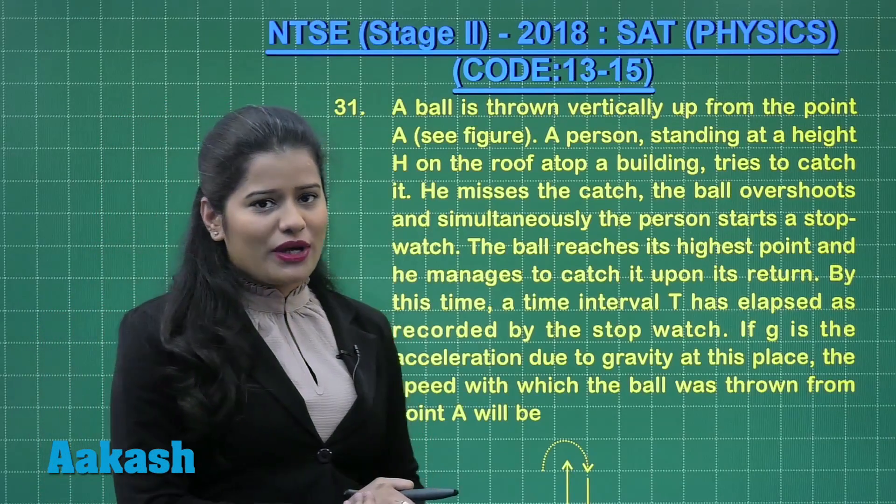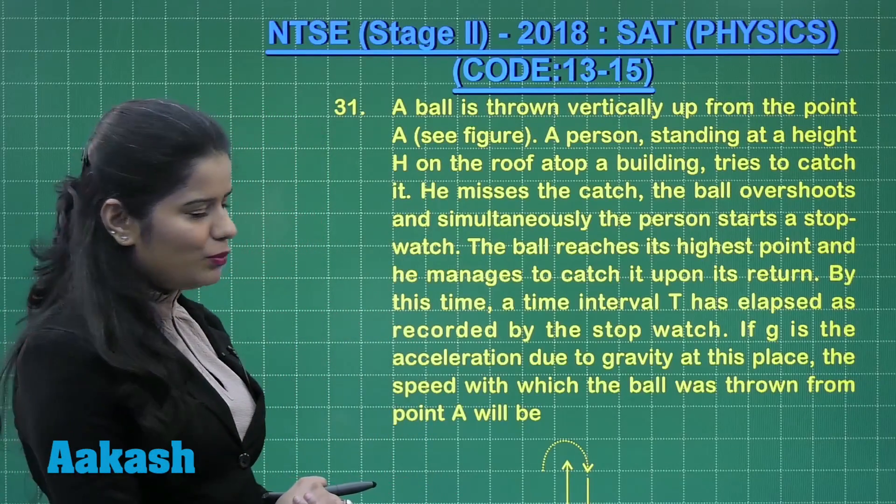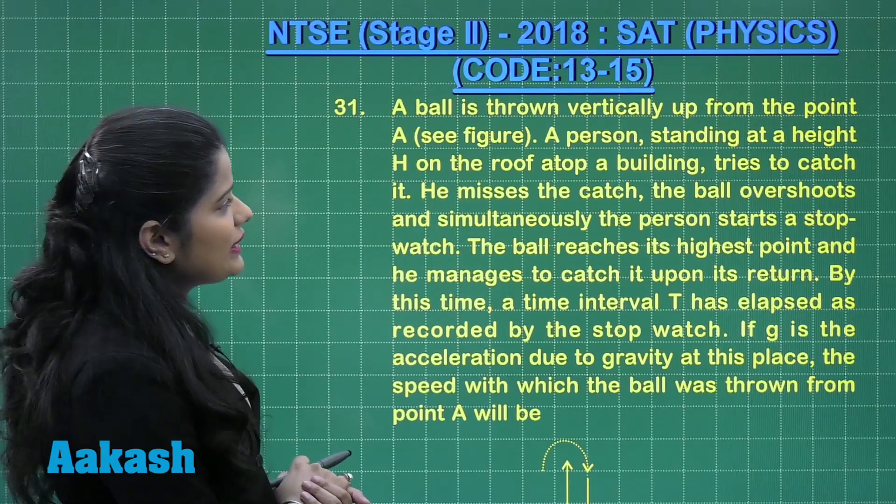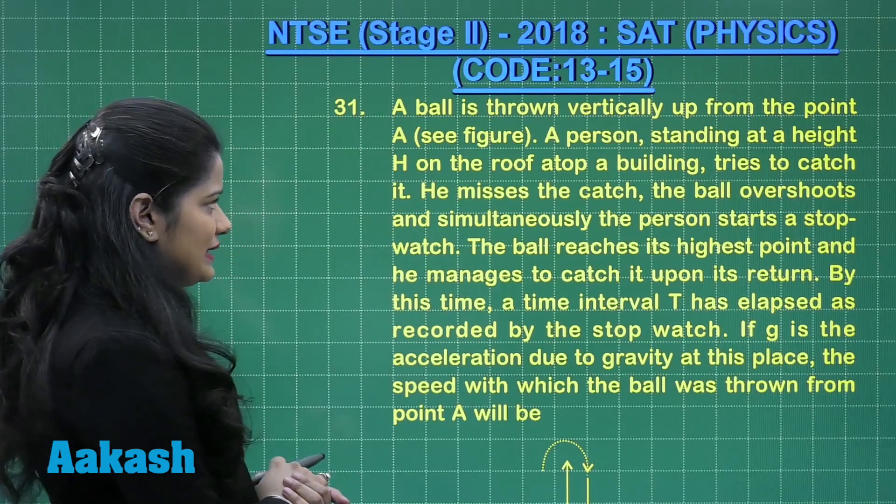Hey, so it's time to take up the next question. Here we have question number 31 on the board which says, a ball is thrown vertically up from the point A.